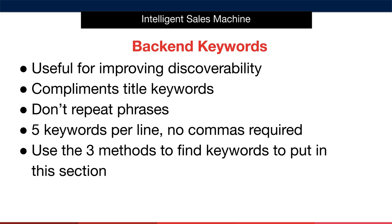Make sure you don't repeat any of these words, however, because it doesn't help. This is because Amazon references words individually and not necessarily as phrases, though they do recognise phrases. You can input five keywords per line with no commas — just five keywords side by side.